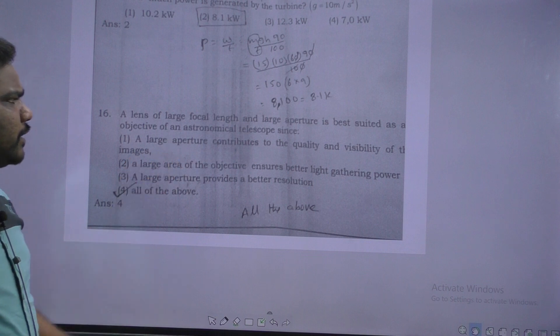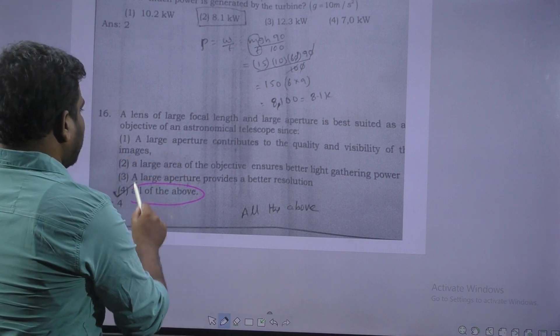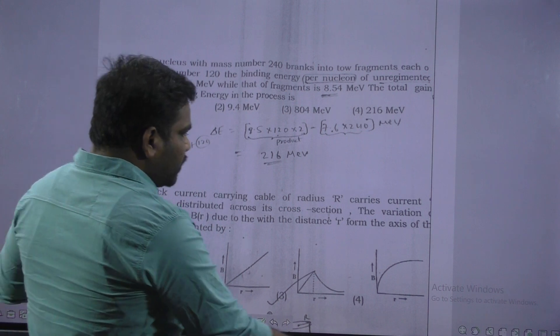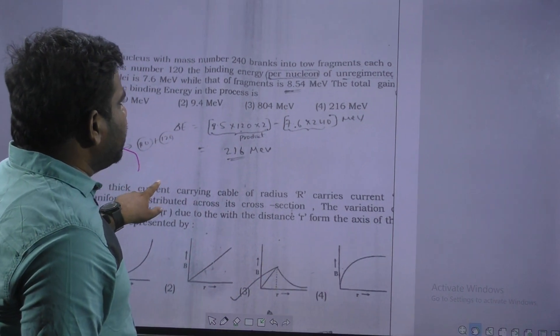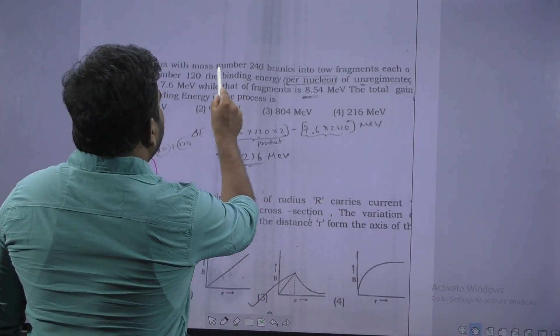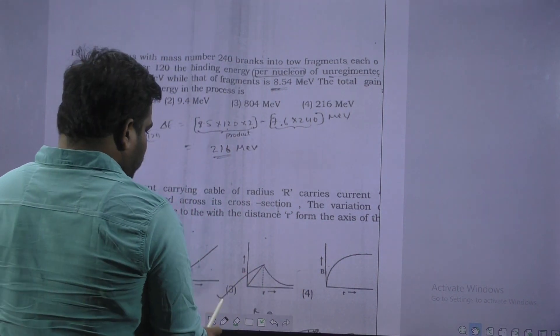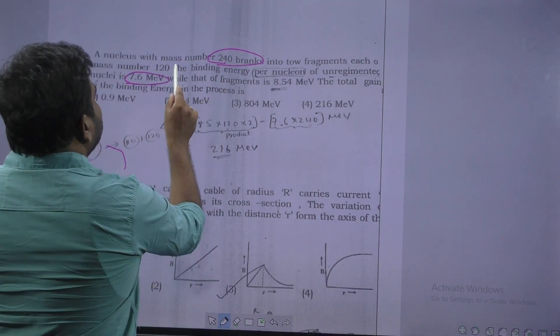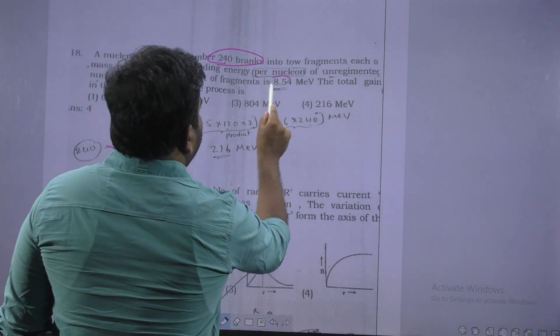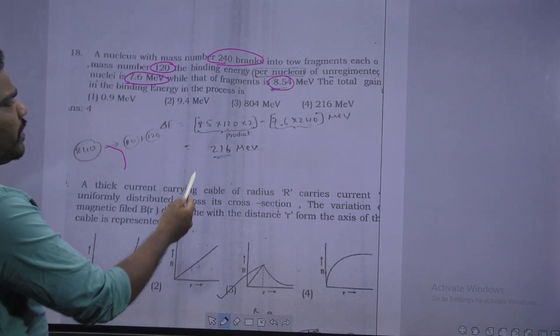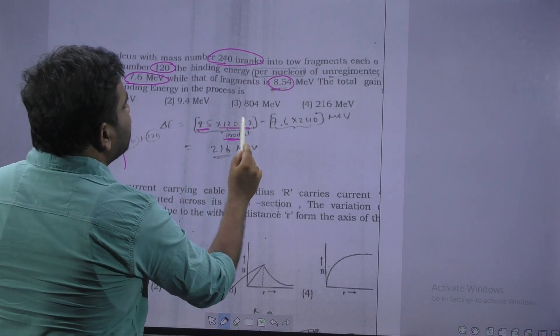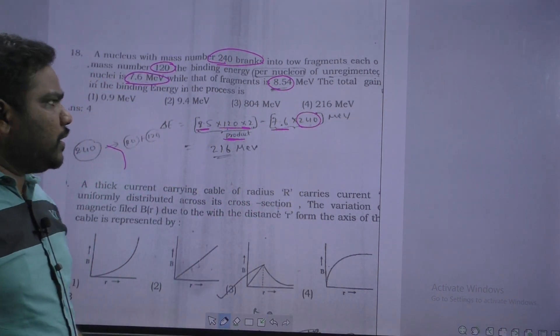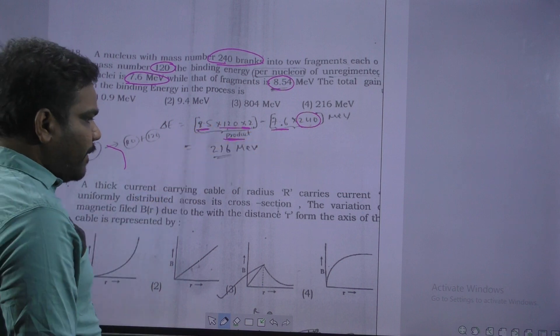Next. For this lens, focal length, all the options are correct. Next question. This is the problem based on binding energy. Difference in energy here. Initially 240 nucleons here. Each nucleon energy is given 7.6. This 240 splits into 120 and 120. Each energy is 8.5. So product's energy is 8.5 each one, these many nucleons are there. For reactants, initially, these many nucleons are there. Each energy is 7.6. Just subtract these two, you'll get 226 MeV.